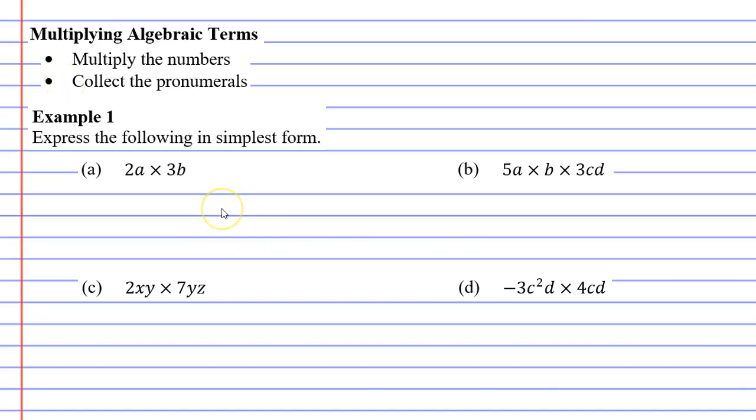Starting with question A, our numbers are 2 and 3. 2 times 3 equals 6. When we collect our pronumerals A and B, which basically means put them next to each other, we get 6AB.